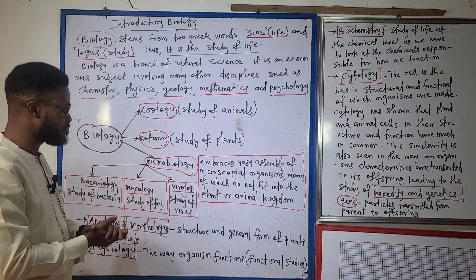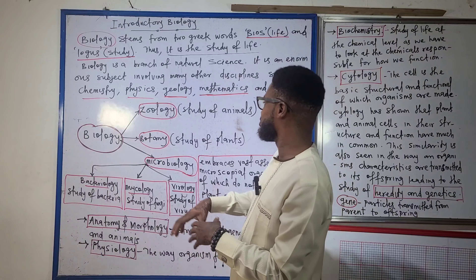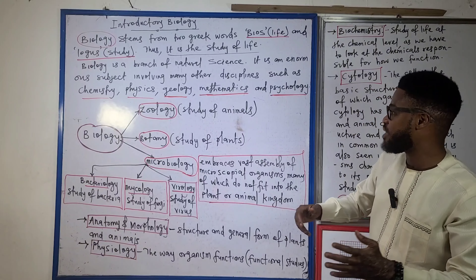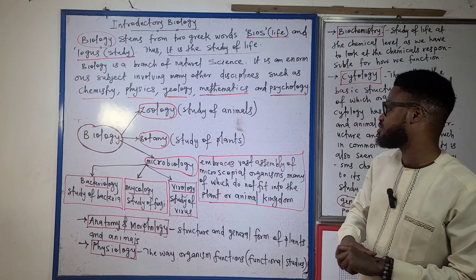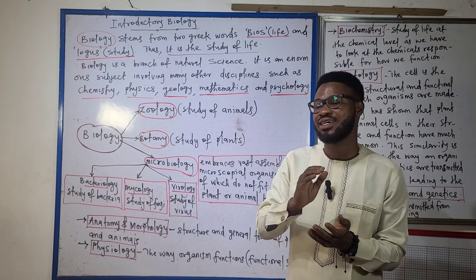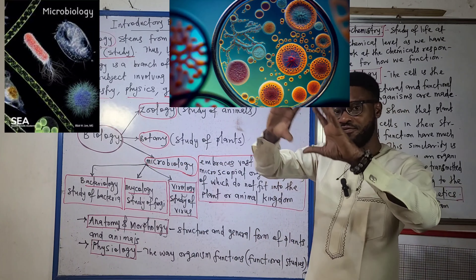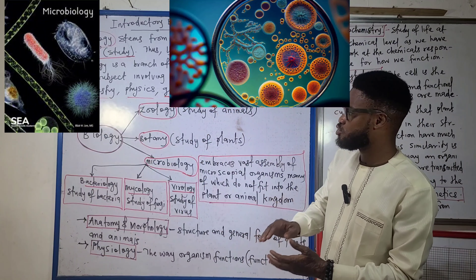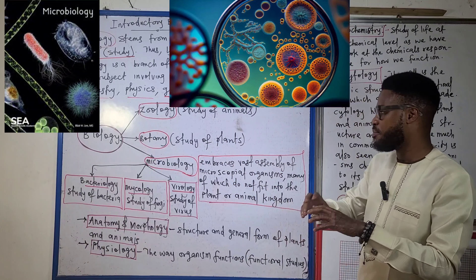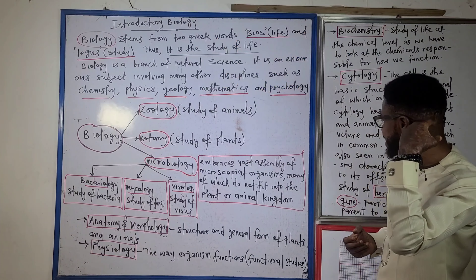Before now, biology has always been divided into the traditional zoology and botany — thinking about studying animals and plants. Zoology is the study of animals and botany is the study of plants. But what about those living things, those organisms that we cannot categorically say are a plant or an animal? That is where microbiology comes in, to cover the vast assembly of microorganisms which do not actually fit into the animal or plant kingdom.